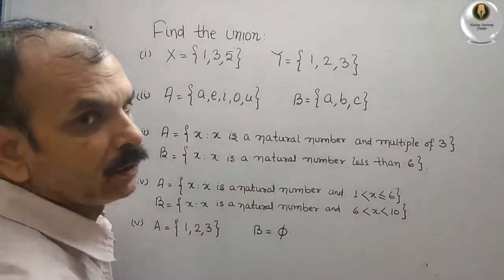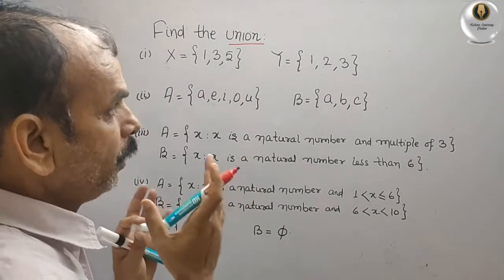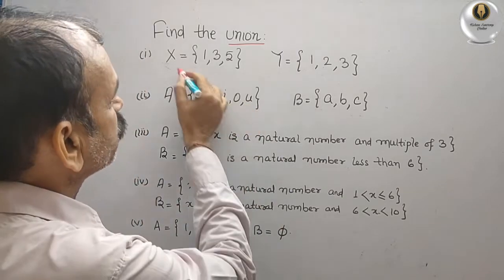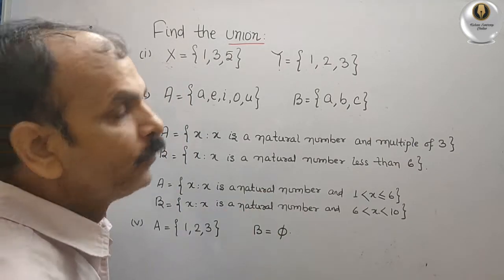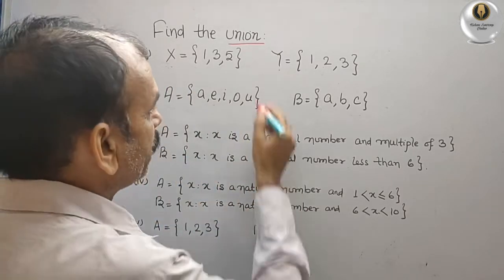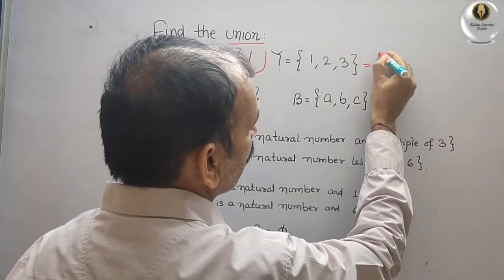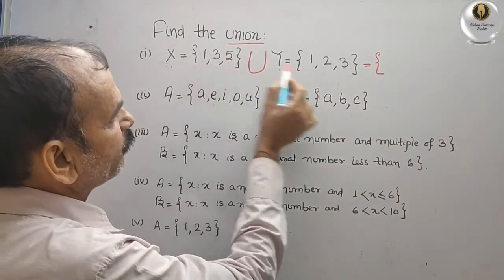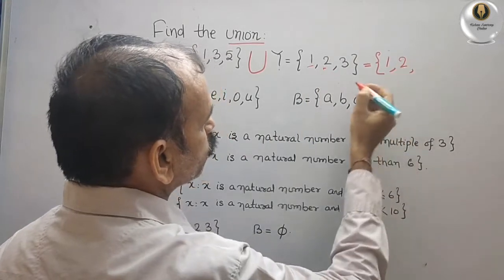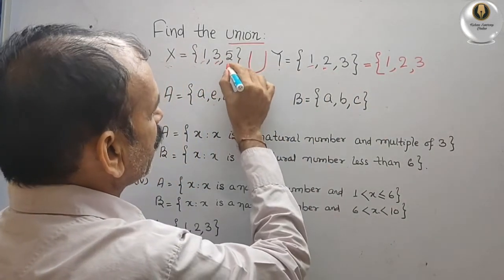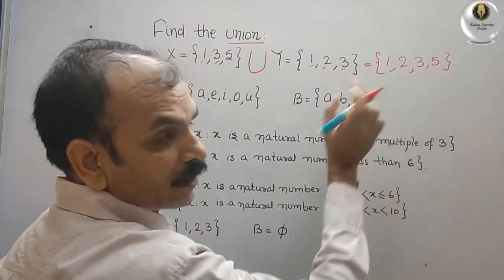The question is to find the union. Union means we have to make a set which contains all the elements of X, Y, and whatever they give you. Union is denoted by capital U. So X union Y: one is here, one is here, so we write one; next two, we write two; three is here and three is here; and remaining is five. So this is your master set — union means the master set which contains both elements of the sets.